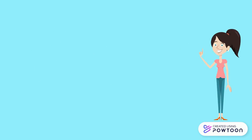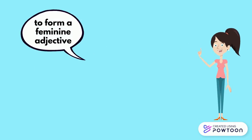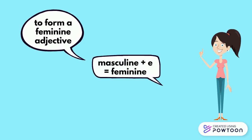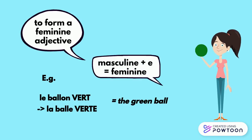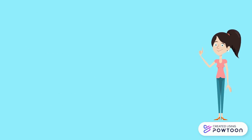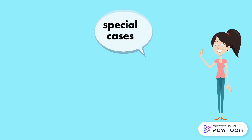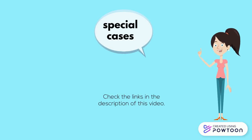Generally, to form a feminine adjective, you add an E to the masculine form. For instance, le ballon vert, la balle verte — the green ball. There are quite a lot of special cases, but I am not going to cover this here because there is another video just about that.